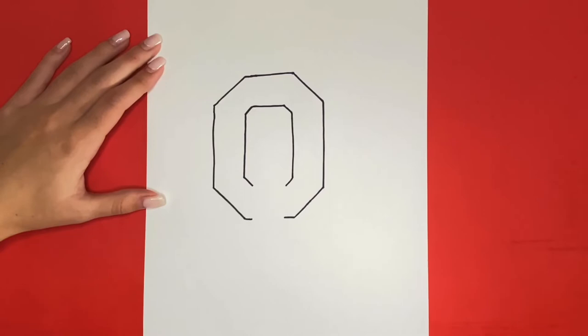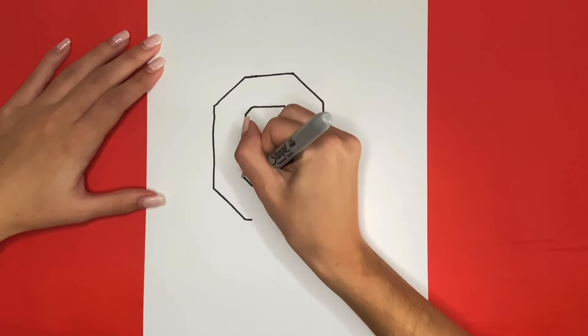We are all done drawing the O. Next we are going to draw the U for the Oklahoma University logo. Inside of the shape that we just drew we are going to draw a rectangle connecting at the bottom where the opening is.